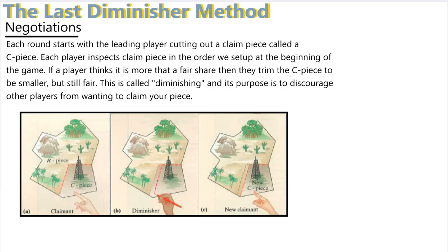To give a visual of what negotiations might look like, we have a parcel of land with a carve-out of the first piece. Each round starts with the leading player cutting out a piece called the C piece — that's the claim piece. Each player then in order will inspect the piece to determine if they think it is a fair share. If it is more than a fair share, they must trim the C piece to be exactly a fair share to them.